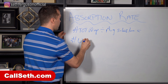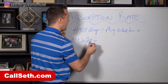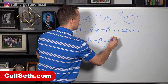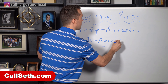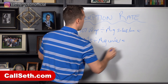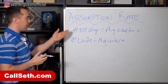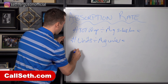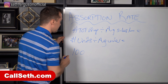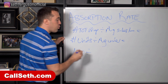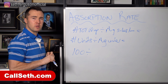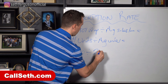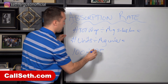The same thing applies with leasing: take the total number of units available for lease or rent and divide it by the average number of units rented per month. So let's say, if we're looking at buying and selling property, there are 100 properties listed for sale right now.